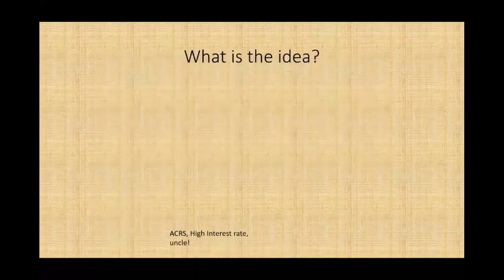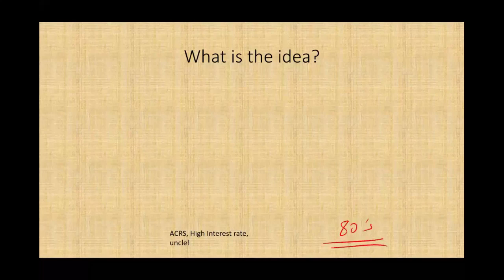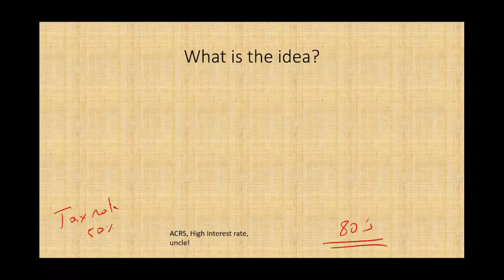So what is the idea of this session? Well, we have to go back to the early 80s. What was happening in the 80s? The first thing you want to know is we had a high marginal tax rate — the highest marginal tax rate was 50%. So a taxpayer making a lot of money, once they exceeded a certain amount, they were paying 50%, sharing their profit 50-50 with the federal government. So people were looking to find ways to shelter their income.